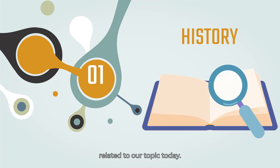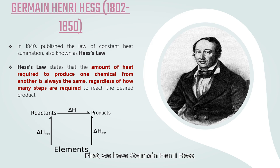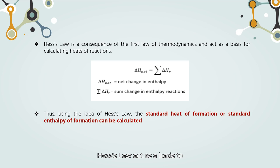We will be covering two people related to our topic today. First, we have Germain Henri Hess. He published Hess's Law in 1840 where the law states that the amount of heat required to produce one chemical from another is always the same. Regardless the amount of steps needed, Hess's Law acts as a basis to calculate the heat of reactions.